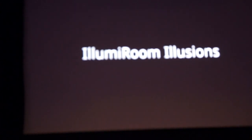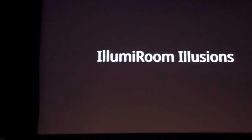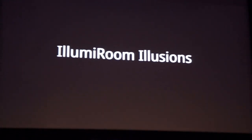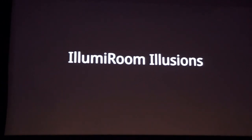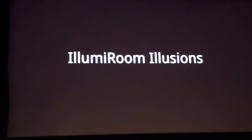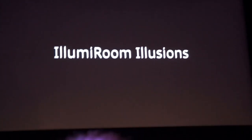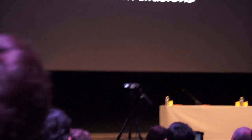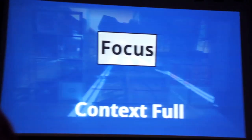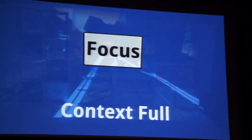We present eleven peripheral visuals which we call illusions. We prototyped illusions which we believe represent the primary dimensions of the design space, and this represents an initial survey and is not exhaustive. The most obvious way to increase immersion is to simply extend the content from the television screen out into the room, replacing the physical reality with the game's reality.